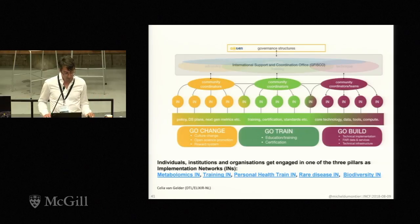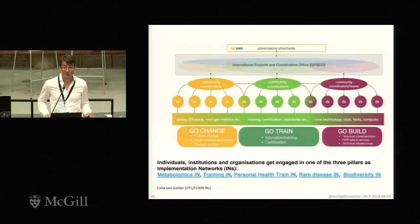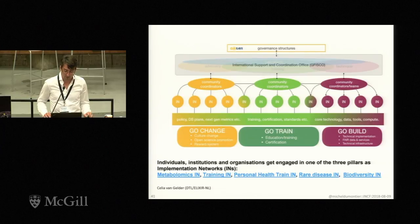Go FAIR is meant to be a grassroots initiative focusing on three things: Go Build — technical infrastructure for doing FAIR work — training networks, and the cultural change required to embrace this. There are networks for metabolomics, for training, for rare diseases, and there was some talk about maybe having something for neuroscience and neuroinformatics, which I think would be a great place for this discussion to go.